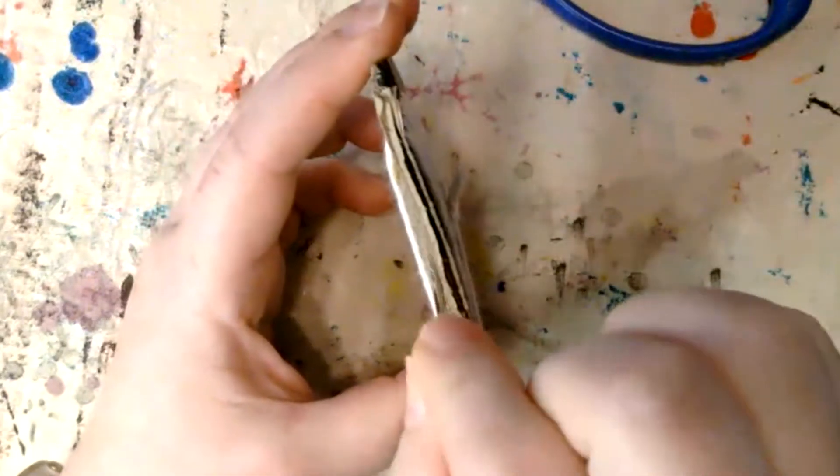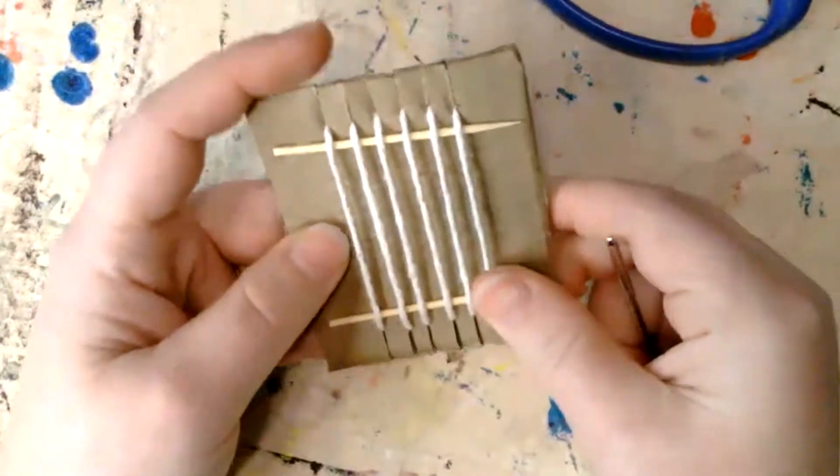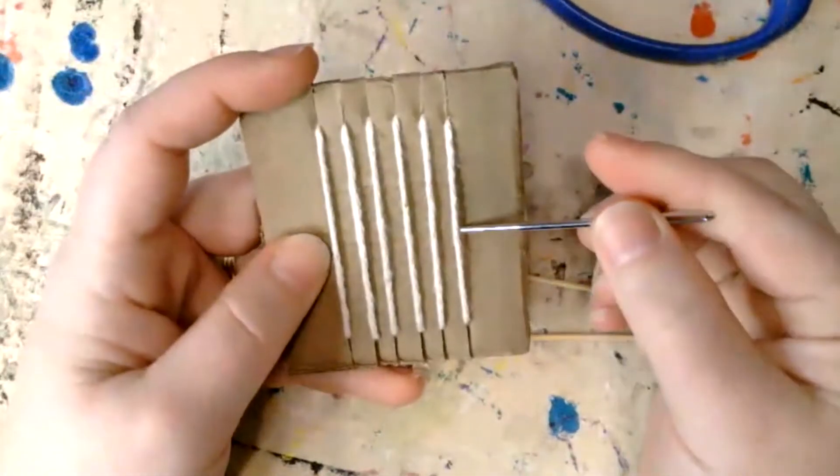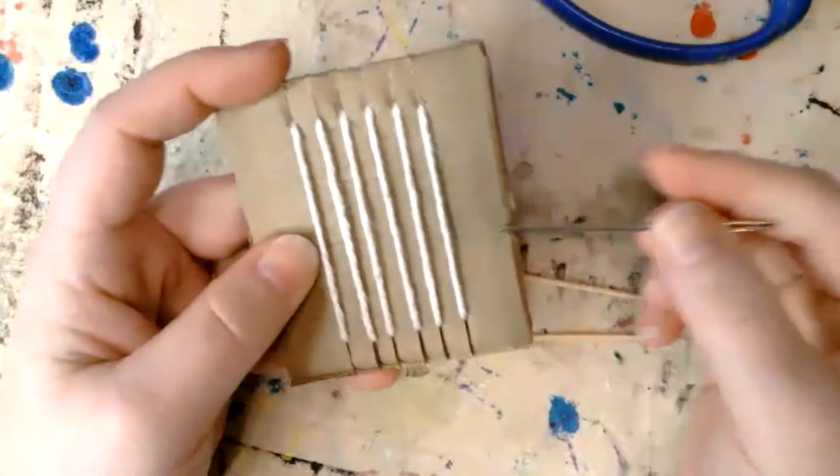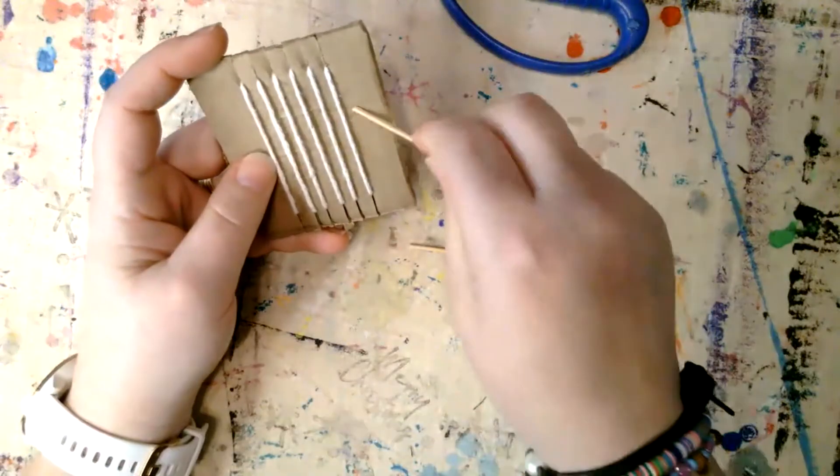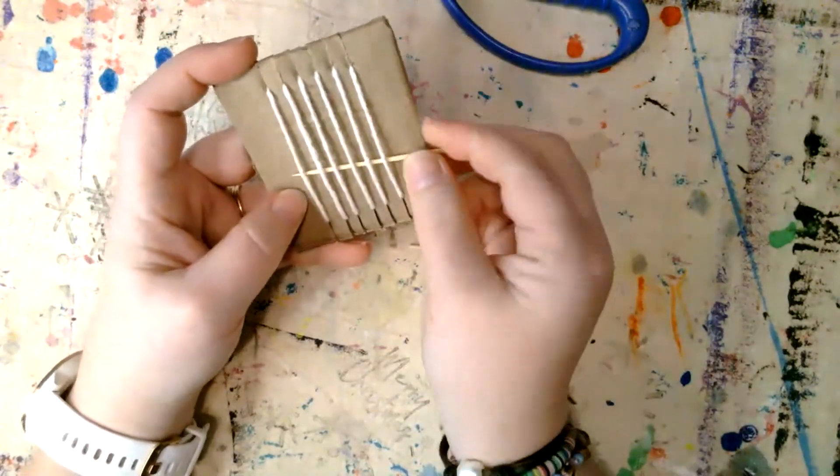If you don't have the toothpicks, it will still work. You'll just have a harder time putting your needle up underneath. That's why I like to have the little toothpicks under there. If you don't have toothpicks, you can use just about anything, little baby cardboard spacers.